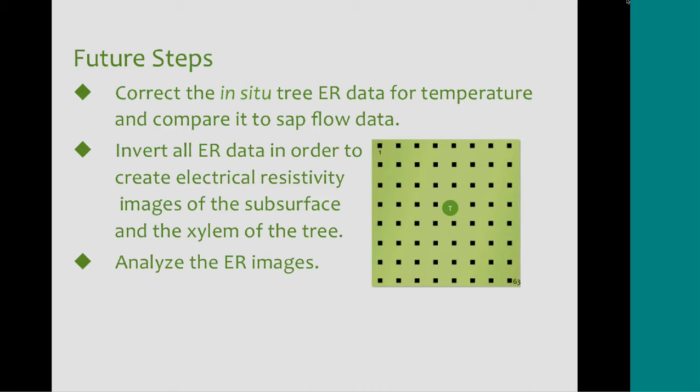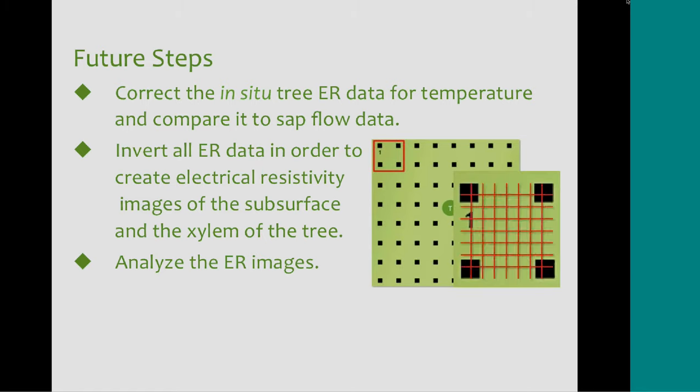In one of the previous pictures, you may have seen that the tree itself was also instrumented with electrodes. However, right now we don't have temperature data, and when we corrected the soil data for temperature, we saw a huge change. So we didn't want to analyze the tree data before correcting for those factors. Once we get that data, we'll correct the tree data as well. To create the electrical resistivity images, we have to invert the data — putting it through code that creates a finer grid within the larger grid and assigns resistivity values to each cell, enabling higher quality images of the subsurface.